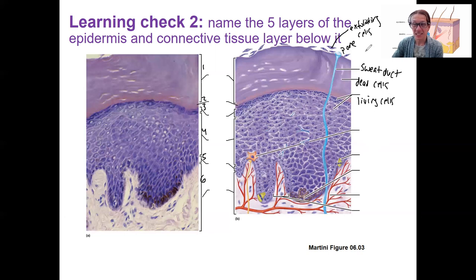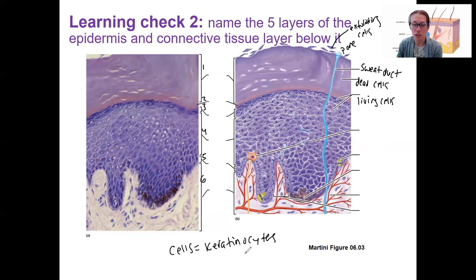The cells in the epidermis are called keratinocytes, because they make keratin. Keratinocytes are a type of epithelial cell — a specialized epithelial cell specialized in the skin.